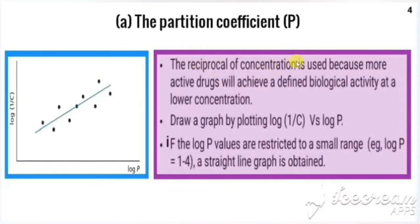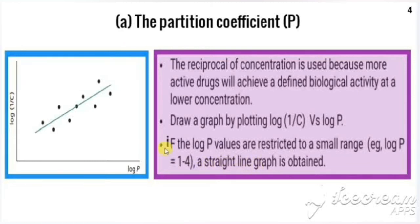We use the reciprocal of concentration because more active drugs achieve a defined biological activity at a lower concentration. The graph is drawn by plotting log(1/C) versus log P, with log P on the x-axis and log(1/C) on the y-axis. When log P values are in a small range — approximately log P equal to 1 to 4 — we get a straight line.